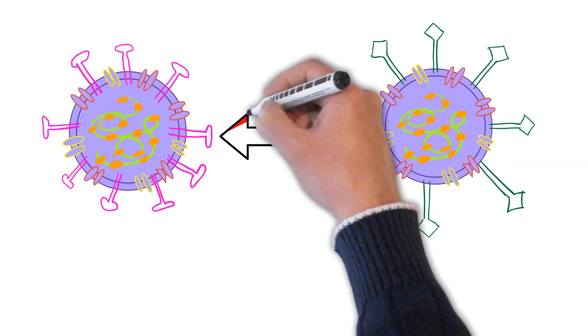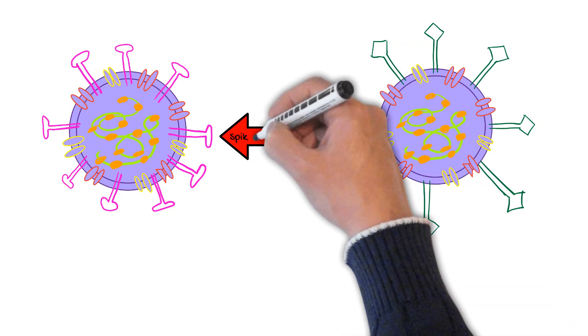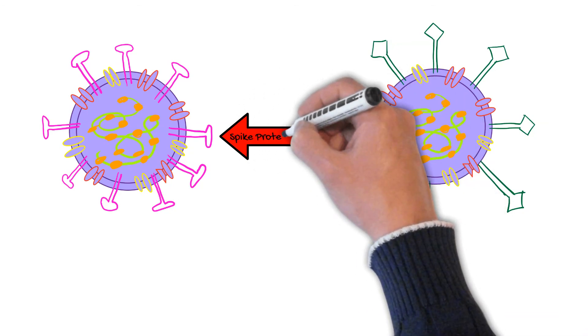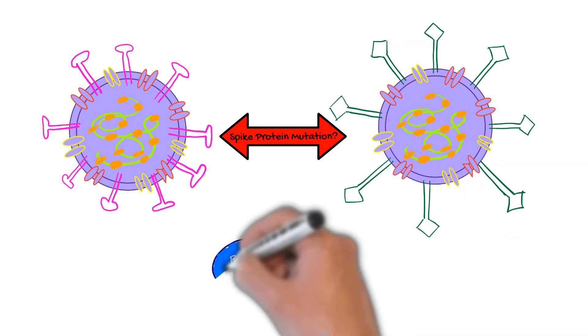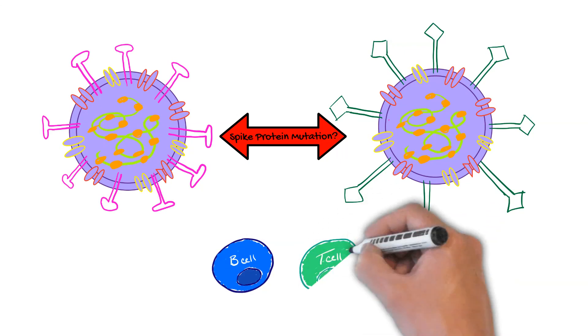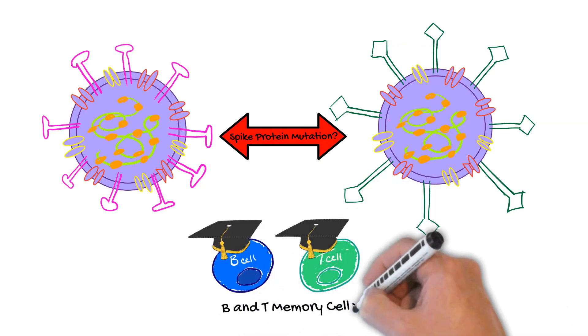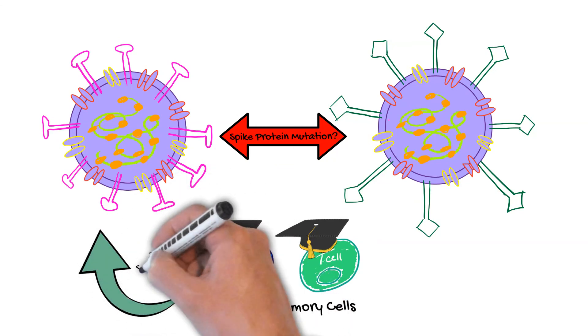Now, most of these variants now have a few changes or mutations in the spike protein, but not enough mutations to make it look different. And so our immune cells are still primed for the spike protein, the wild type spike protein that still looks close enough to the variant protein.